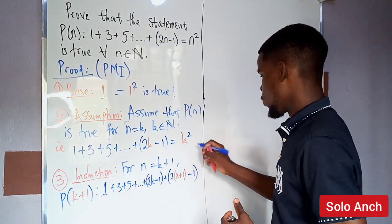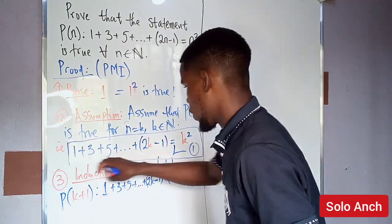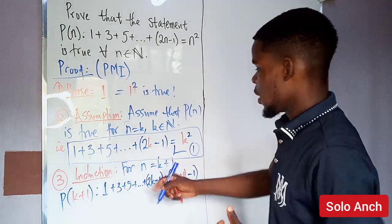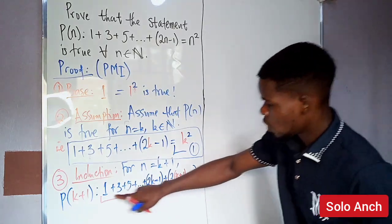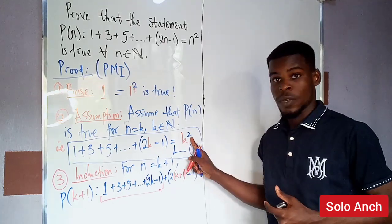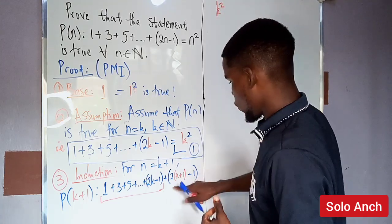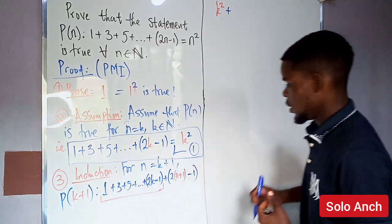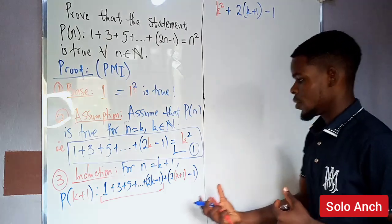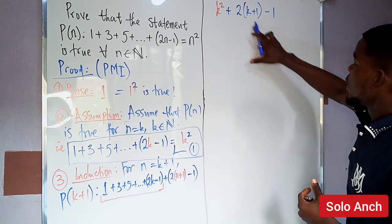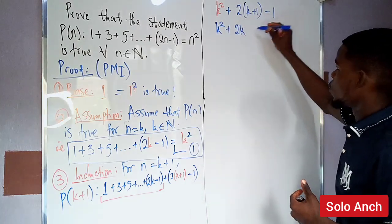From equation one — our assumption — the sum one plus three plus five up to 2k minus one equals k squared. So we replace that portion with k squared and add the remaining term: k squared plus 2(k plus one) minus one, which simplifies to k squared plus 2k plus one.